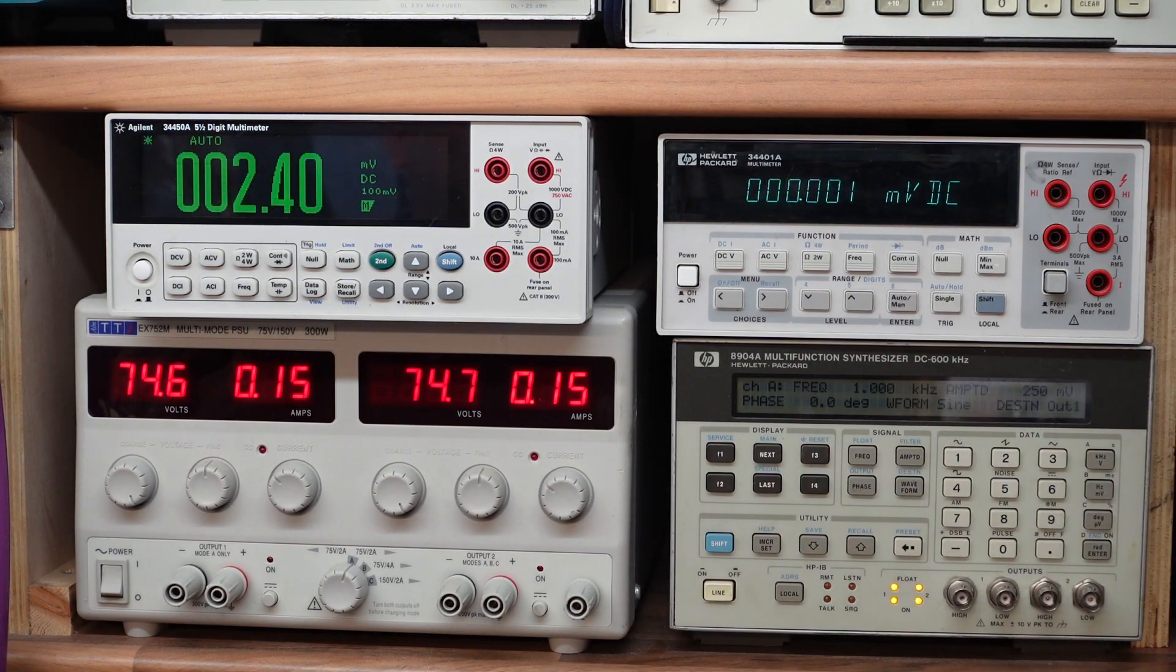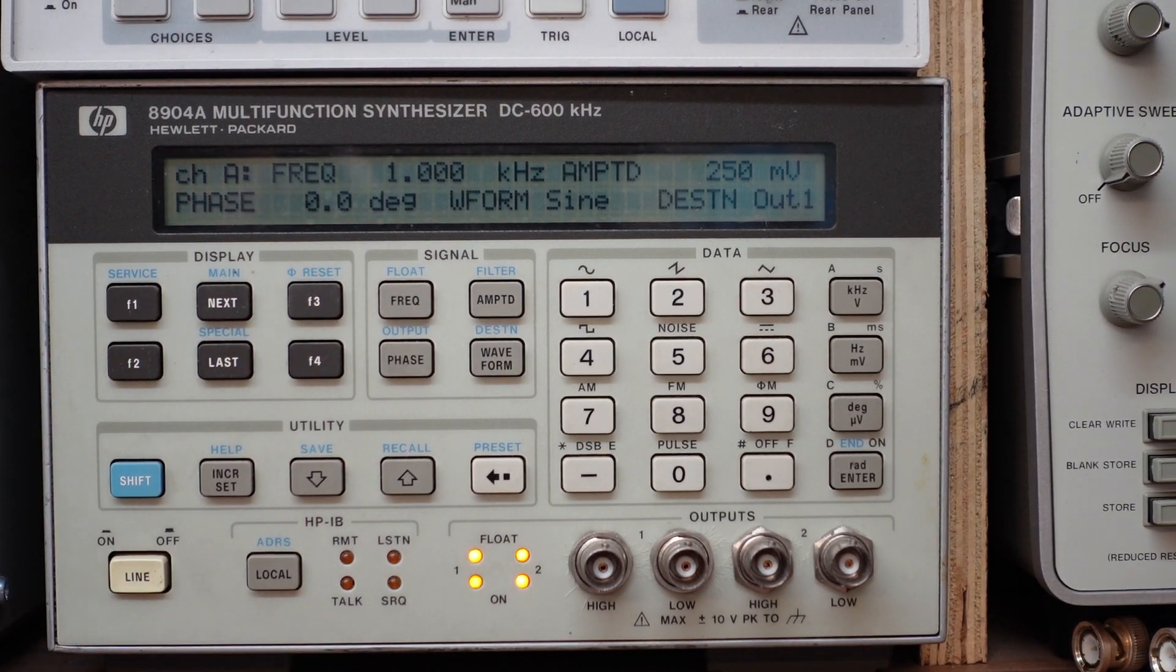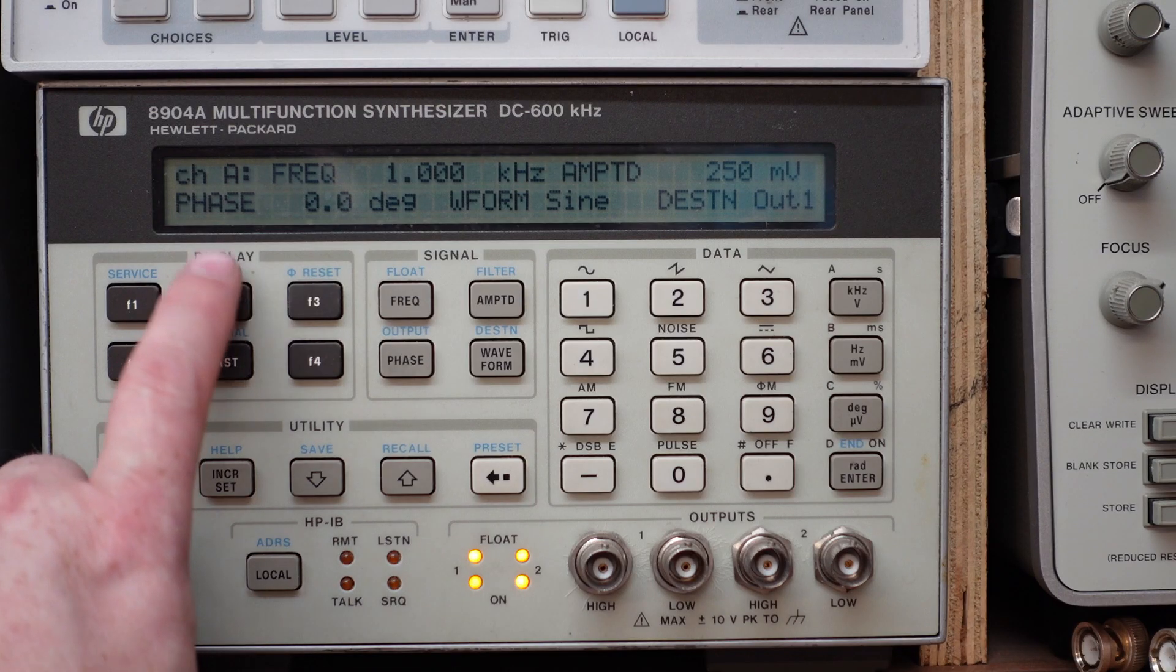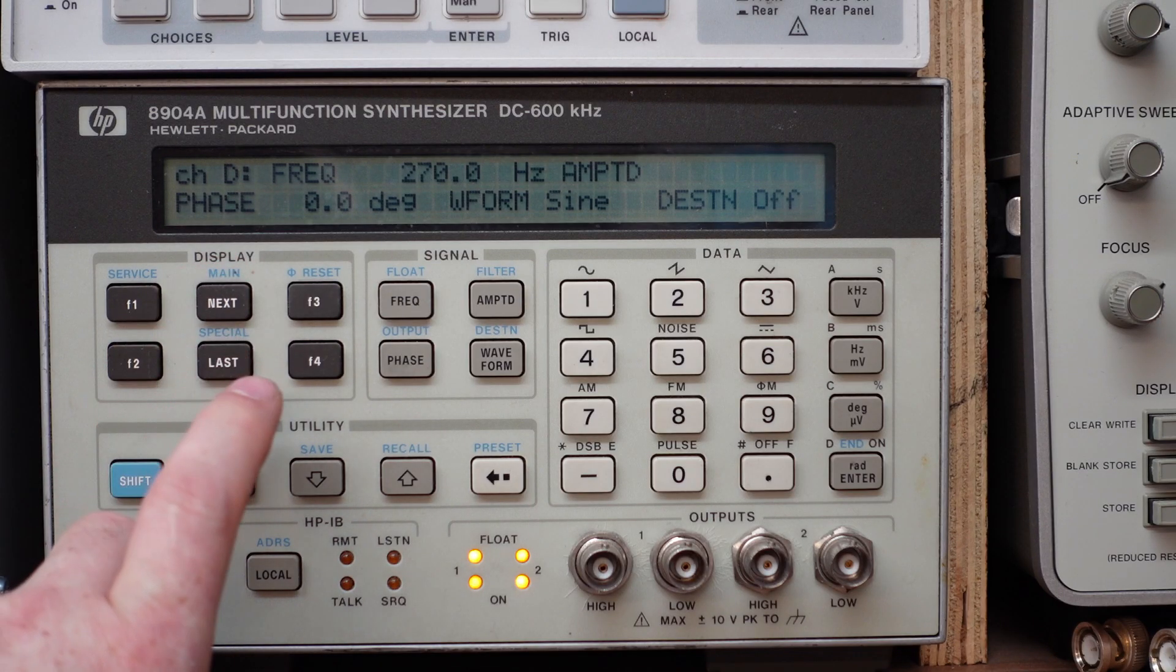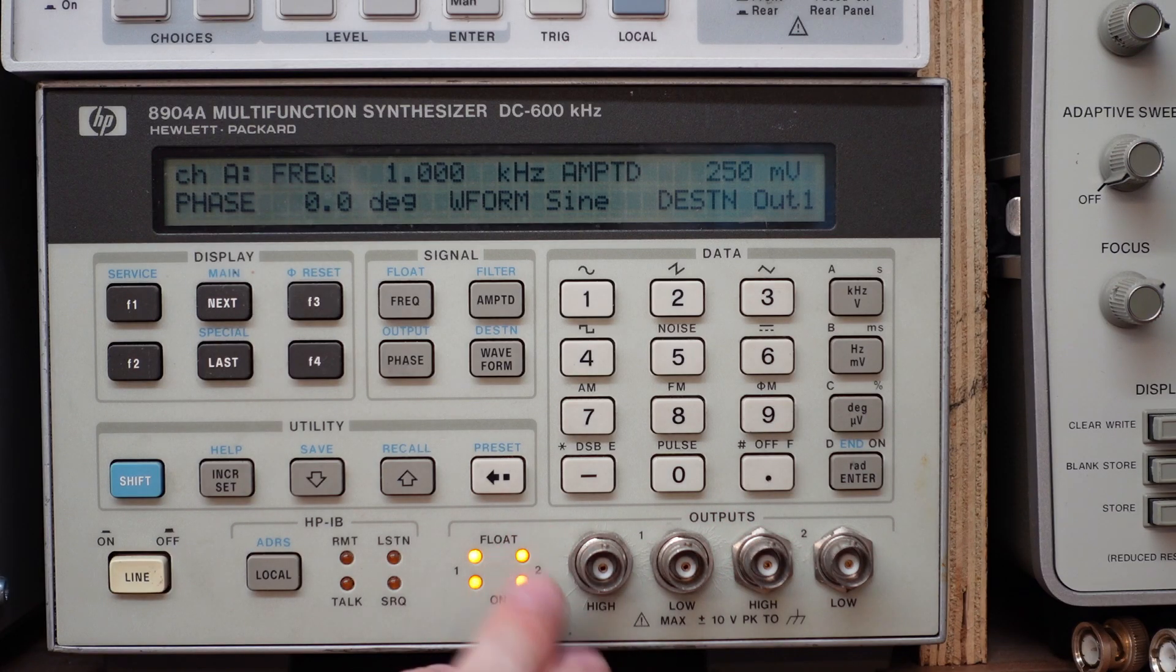And this is my favorite signal generator—this is the HP 8904A. This is a very versatile piece of kit. One of its best features is it actually has four different generators in there: channels A, B, C, and D. And you can direct them to any of the two outputs, and of course these can be floating outputs, so this is great for doing balanced outputs.